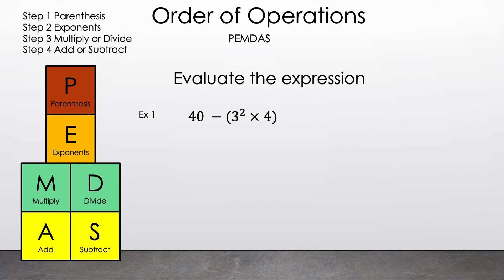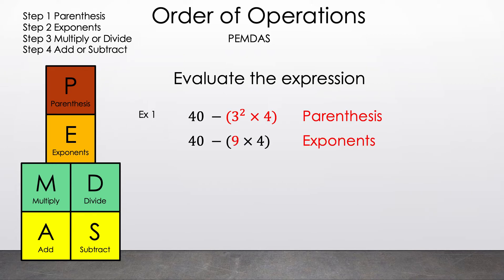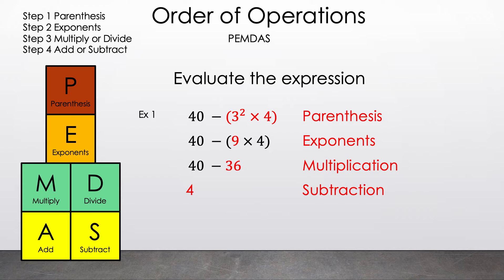Let's read the question: evaluate the expression 40 minus the parentheses of 3 squared times 4. We see parentheses, so let's highlight that. Now we have to decide between the square and multiplication. Since square is a type of exponent, we do that first. 3 squared is 9, so now we have 40 minus the parentheses of 9 times 4. We still have parentheses, so let's do what's inside first. 9 times 4 is 36. So now we have 40 minus 36, and the result is 4. That is our answer for example one.